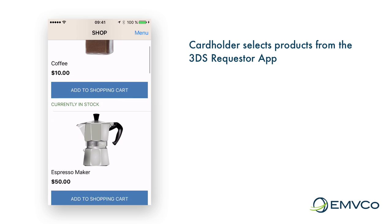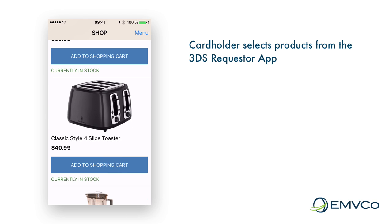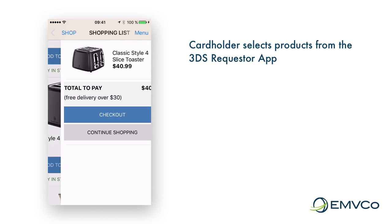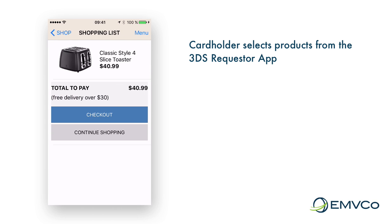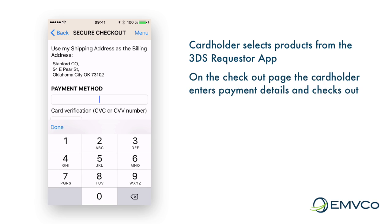First, the cardholder selects a product from the 3DS Requester app and adds it into the shopping cart. Then, on the checkout page, the cardholder provides their payment details and initiates the checkout.